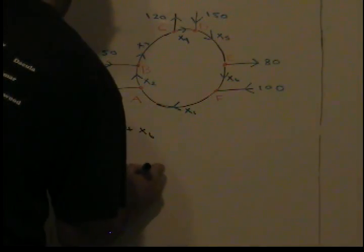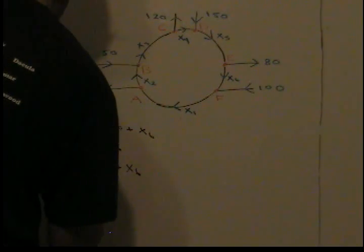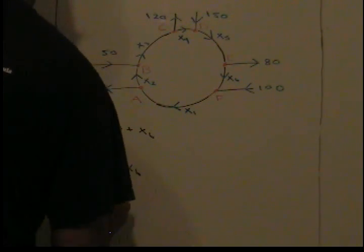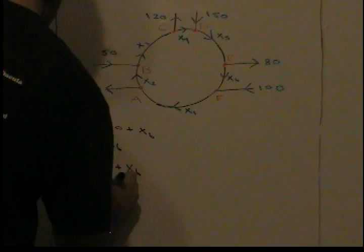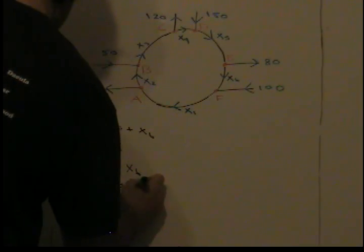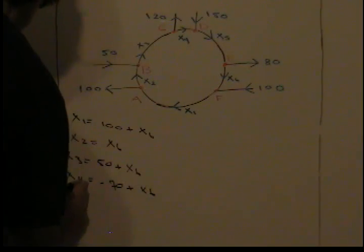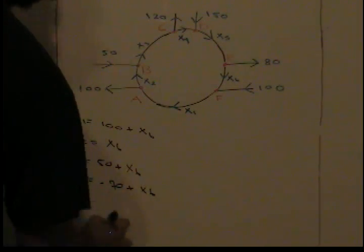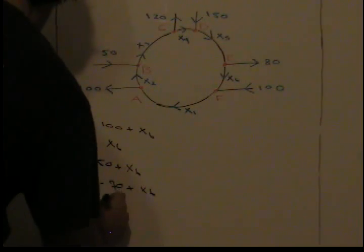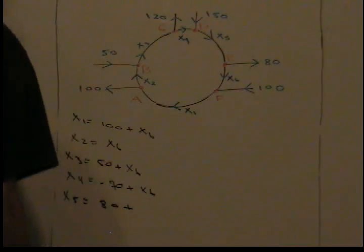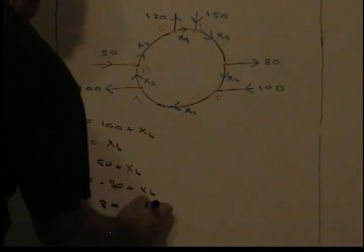So x sub four is equal to negative 70 plus x sub six. X5 is equal to 80 plus x sub six.